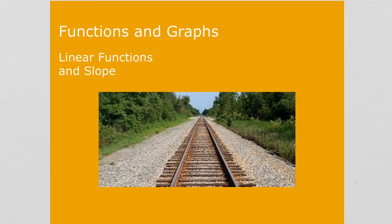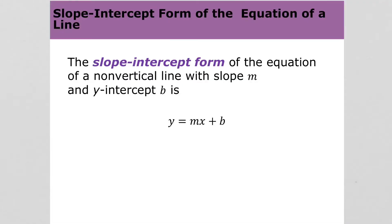Slope intercept form - the slope intercept form of the equation of a line is y equals mx plus b, where your slope is m and b is your y-intercept.